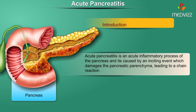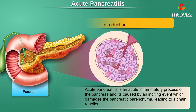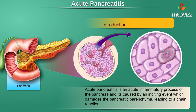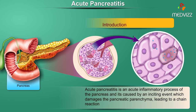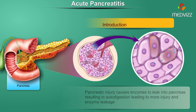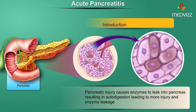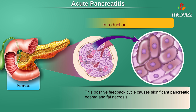Acute pancreatitis is an acute inflammatory process of the pancreas caused by an inciting event which damages the pancreatic parenchyma leading to a chain reaction. Pancreatic injury causes enzymes to leak into the pancreas resulting in autodigestion, leading to more injury and enzyme leakage. This positive feedback cycle causes significant pancreatic edema and fat necrosis.